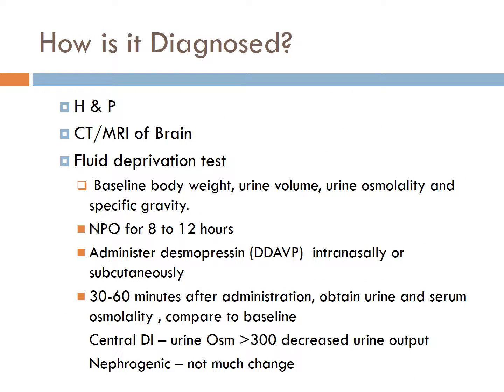Water loss produces changes in blood and urine tests. The first step in diagnosis is to measure a 24-hour intake and output. Urine is dilute with low specific gravity less than 1.005 and low osmolality less than 100. To differentiate between central and nephrogenic DI, obtain baseline weight, urine specific gravity, osmolality, and volume. After 8–12 hours of being NPO, desmopressin 0.5 mg is given subcutaneously or intranasally. After 30–60 minutes, urine output and osmolality is measured again. Both urine volume, specific gravity, and osmolality increase significantly in central DI, whereas not much change is seen if the cause is nephrogenic.